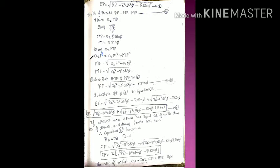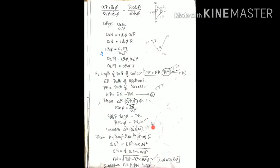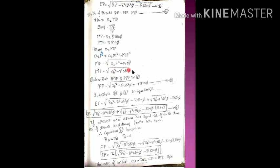MF = √(O2F² − O2M²). O2F is the addendum circle radius of the pinion, ra, and O2M = r·cos φ. Therefore MF = √(ra² − r²·cos²φ). Substituting MF and MP in equation four, path of recess = MF − MP = √(ra² − r²·cos²φ) − r·sin φ. Let this be equation number five.